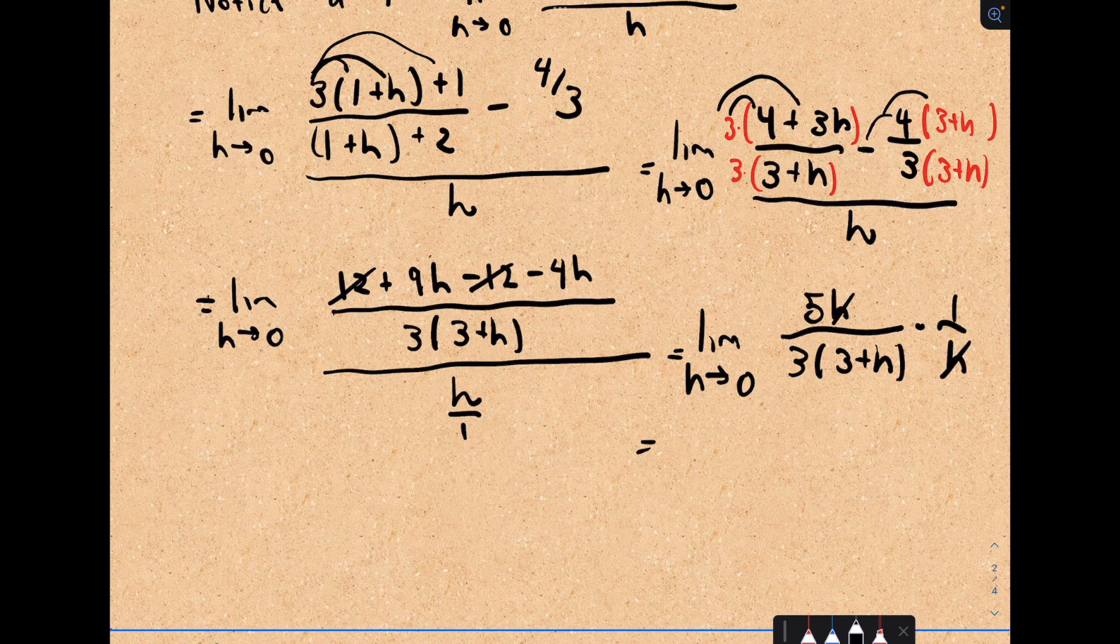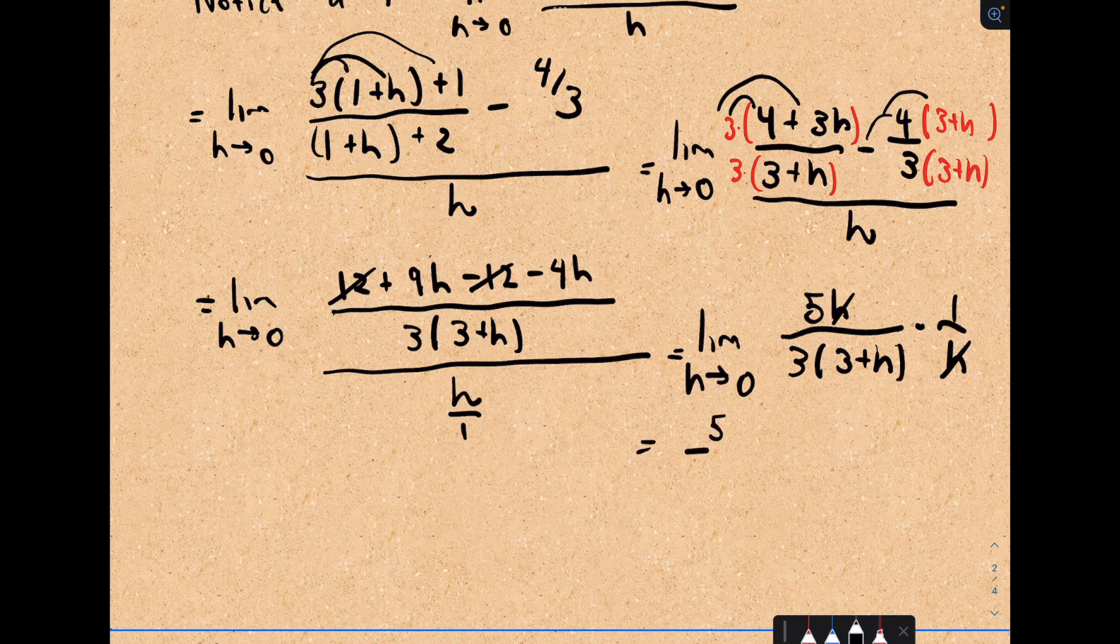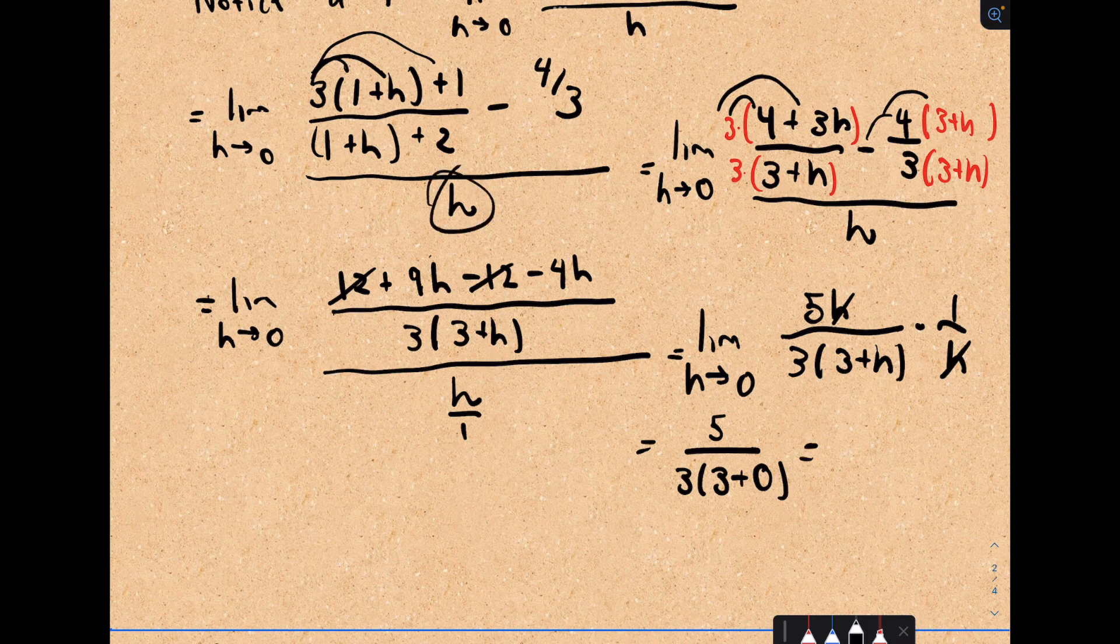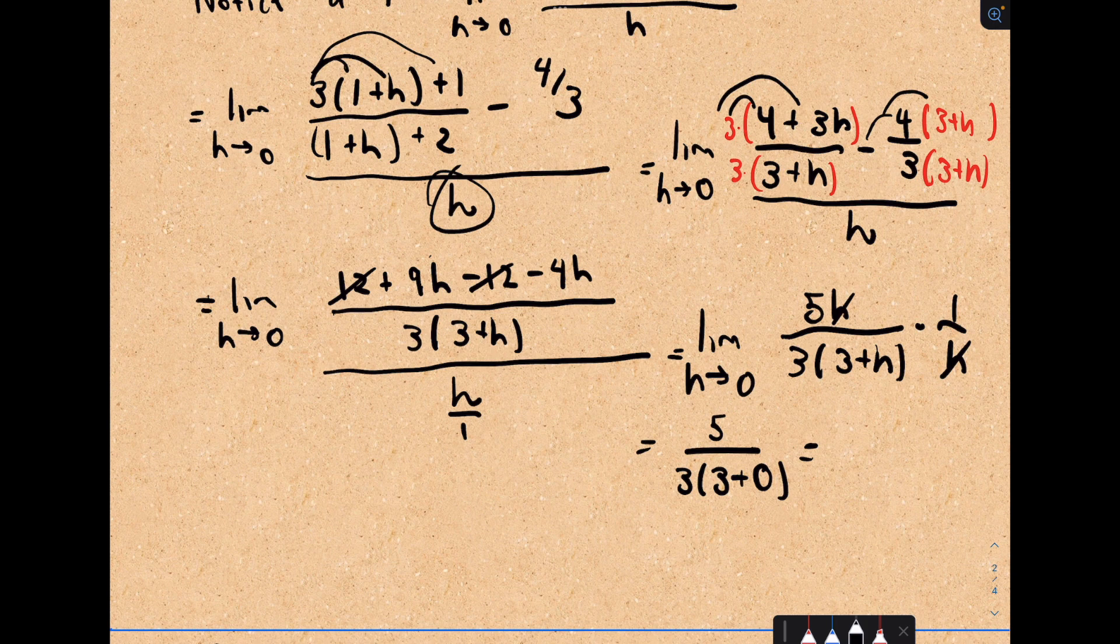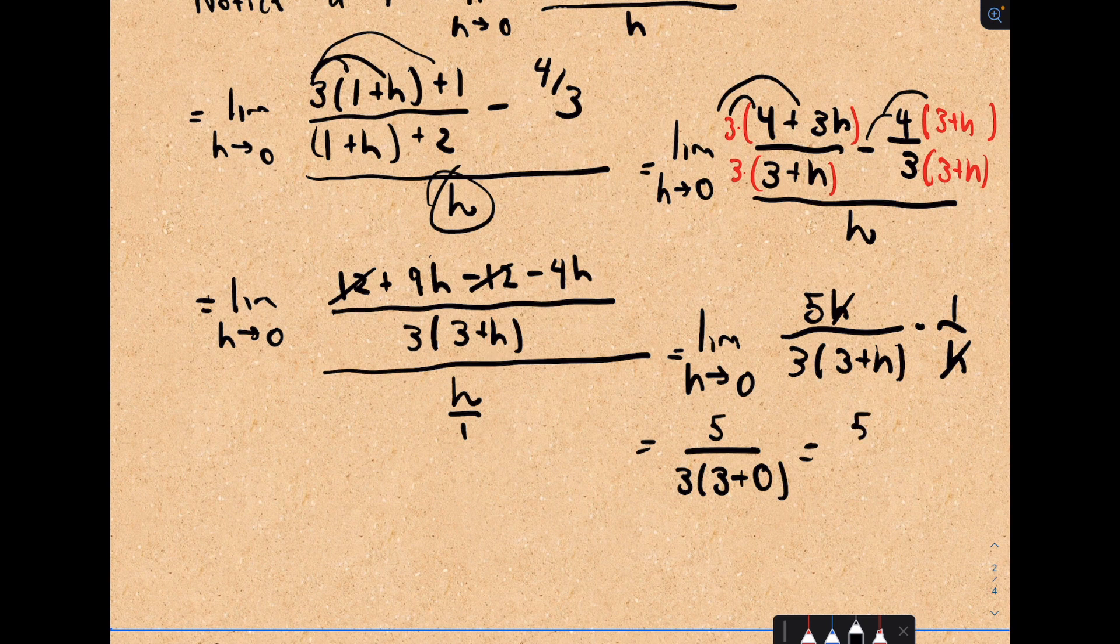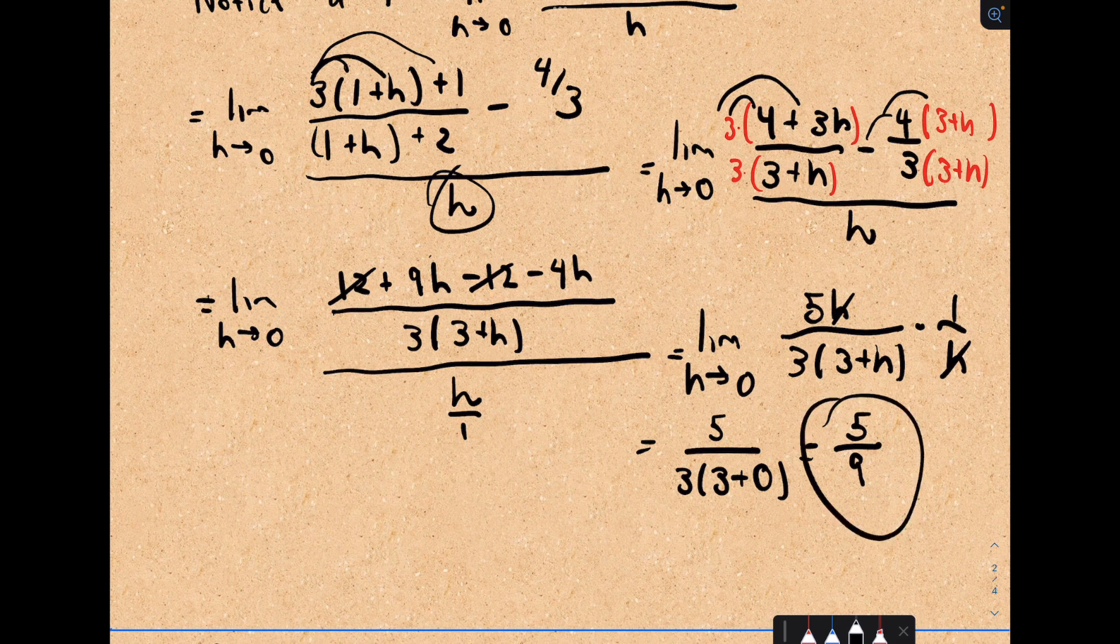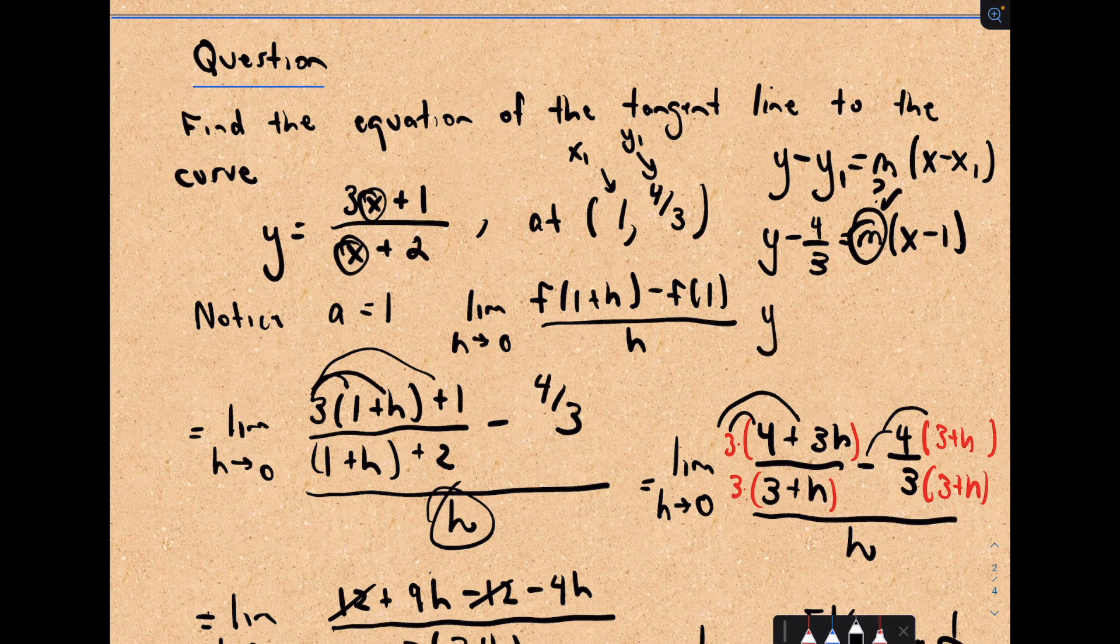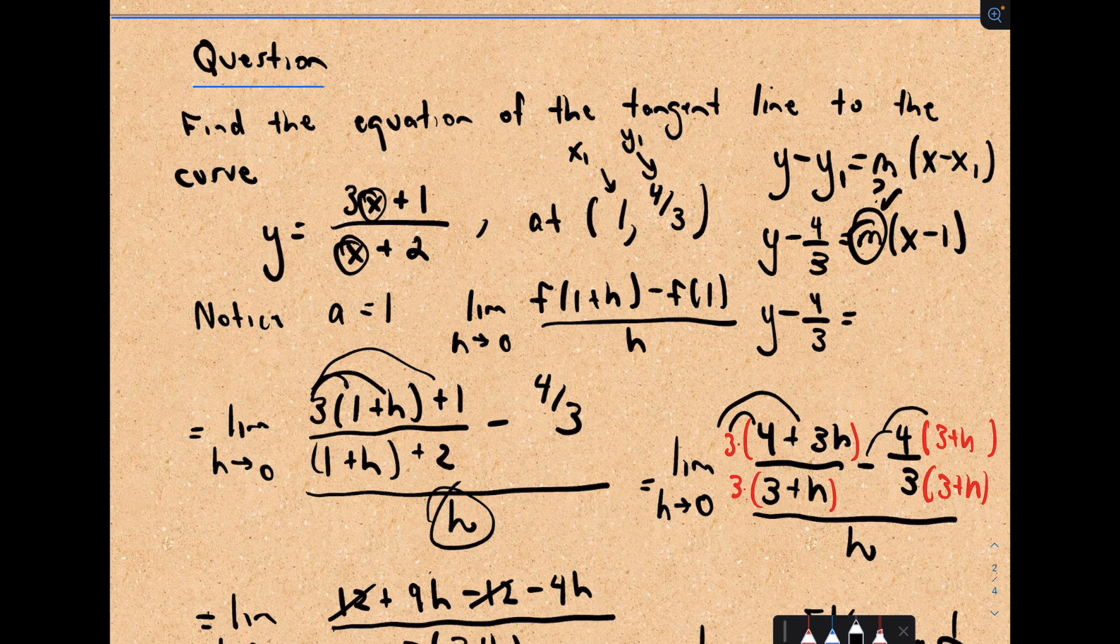Now we're in business because my h's are just going to cancel out here. So my h's cancel, and now I can substitute in this value h equals 0. Notice we couldn't do that before because we would always be dividing by 0. So that's the whole thing in these questions. You're always just trying to do some algebra and eventually cancel out that h, and then hopefully you can just substitute in that limiting value. In the denominator, we would be left with 3 times 3 or 9. That's the slope of the tangent line. So now I know the slope of the tangent line. The equation of my line would be y minus 4 thirds equals the slope, which was 5 ninths, multiplied by x minus 1.